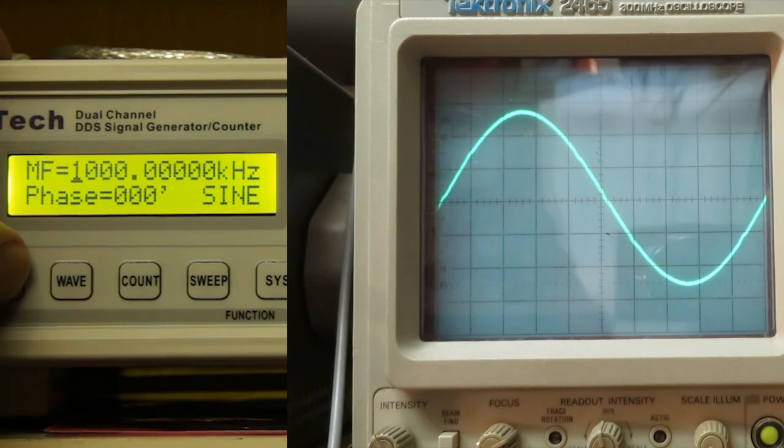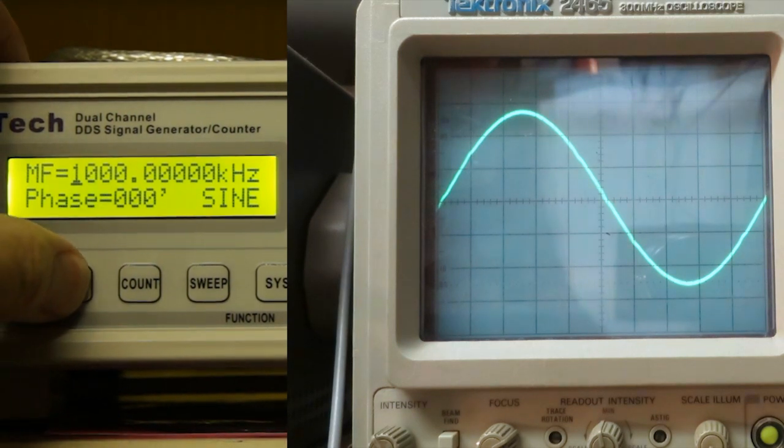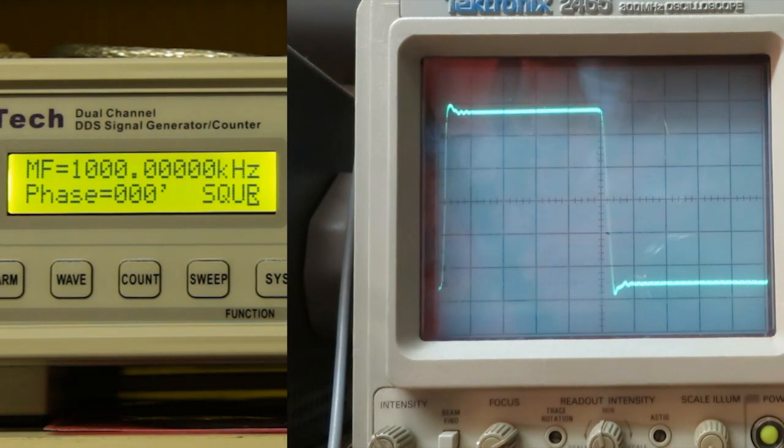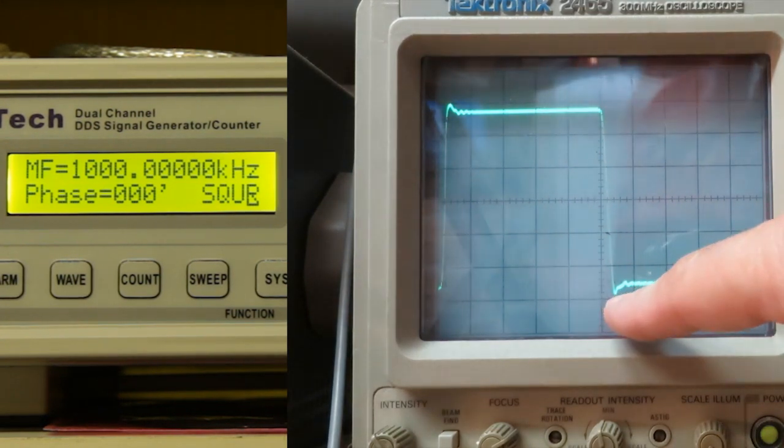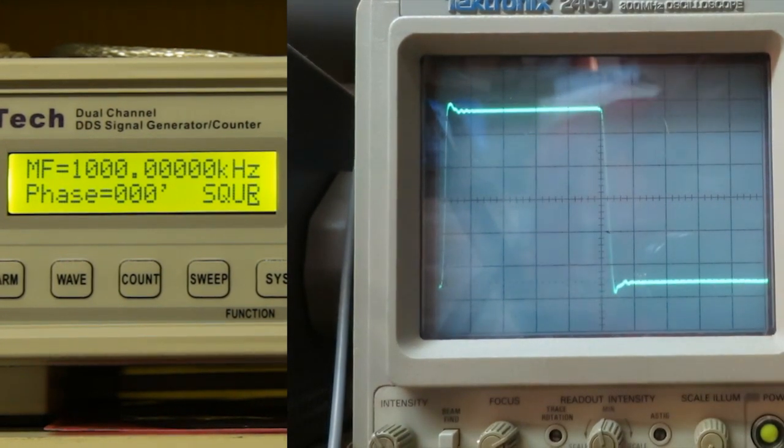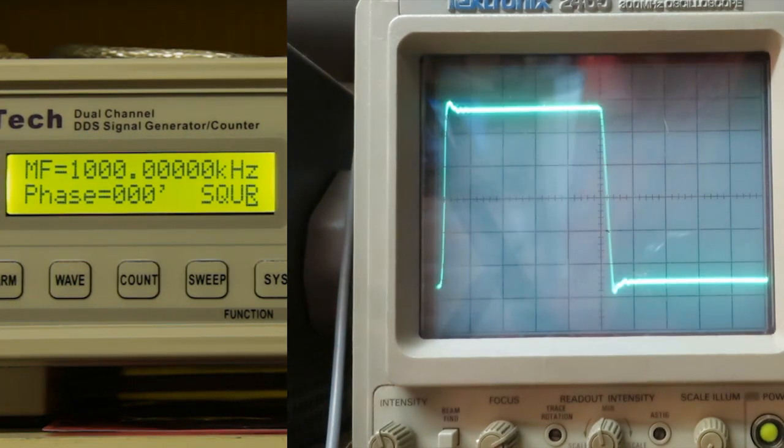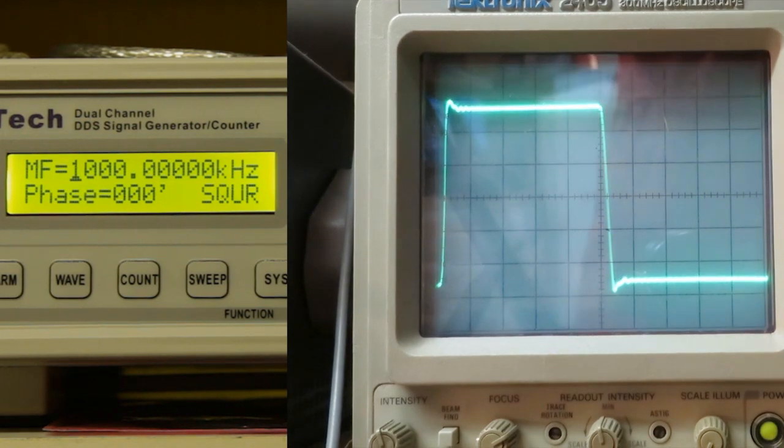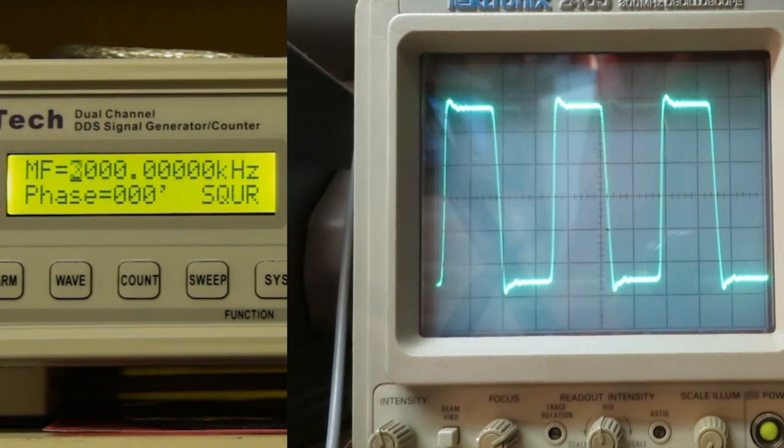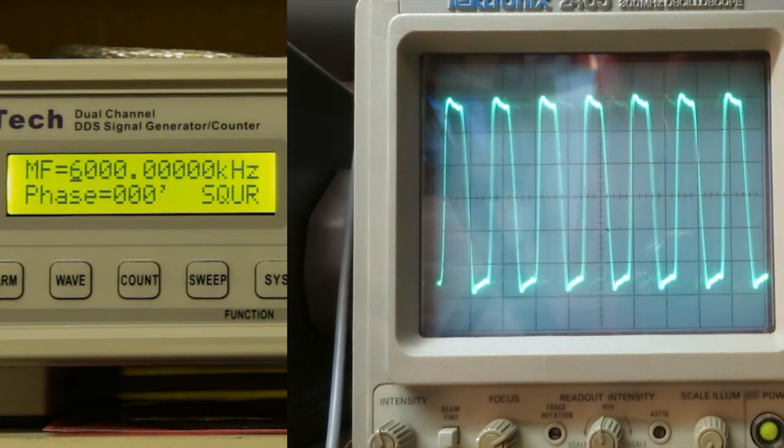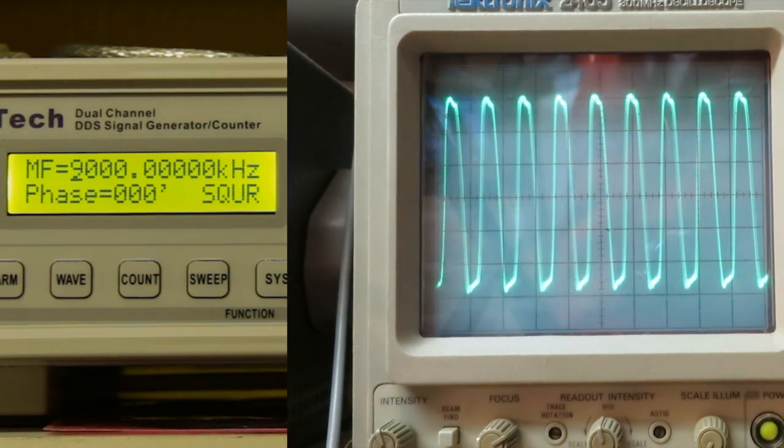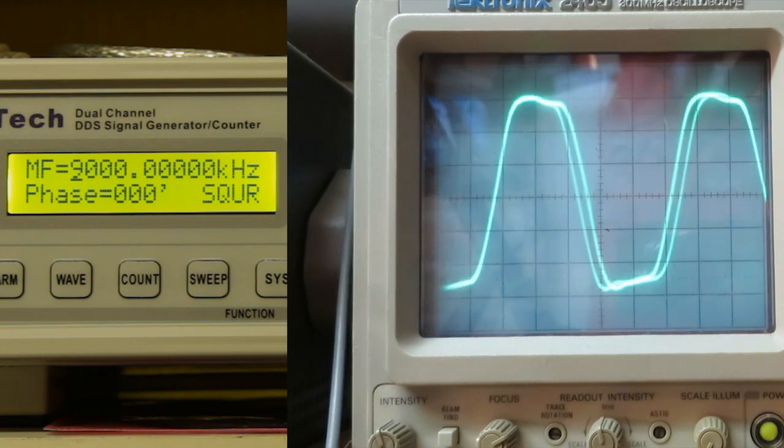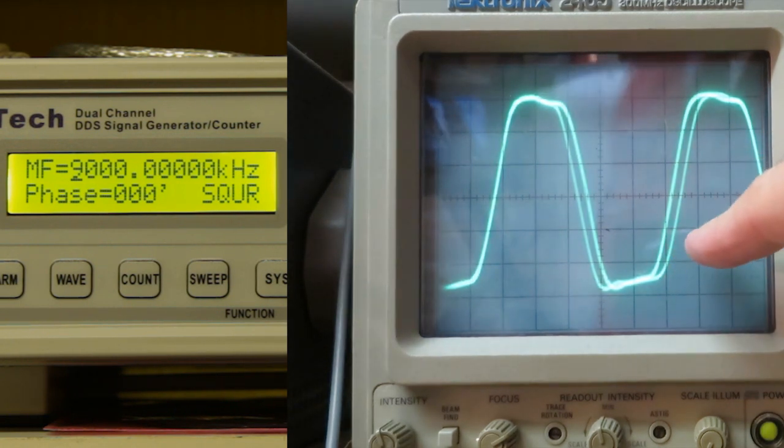The frequency is now set to 1 MHz and I change the waveform to square and have a look at the edges. Let's increase the frequency. Adjust the time base of the scope and we can see that the waveform departs more and more from a square.